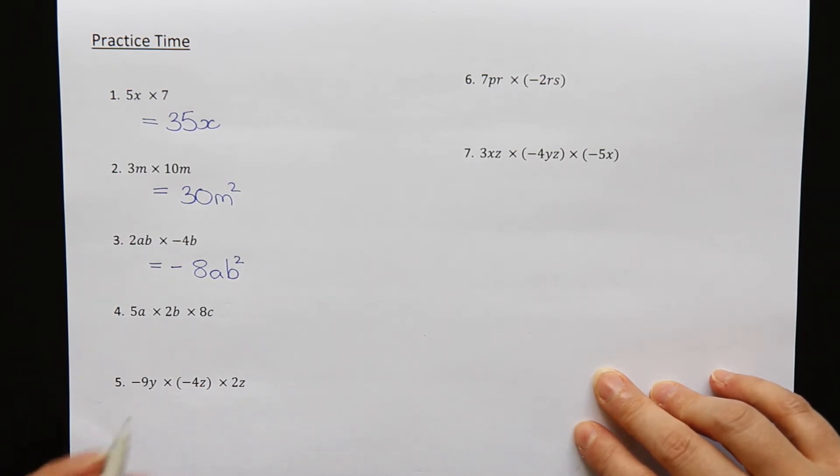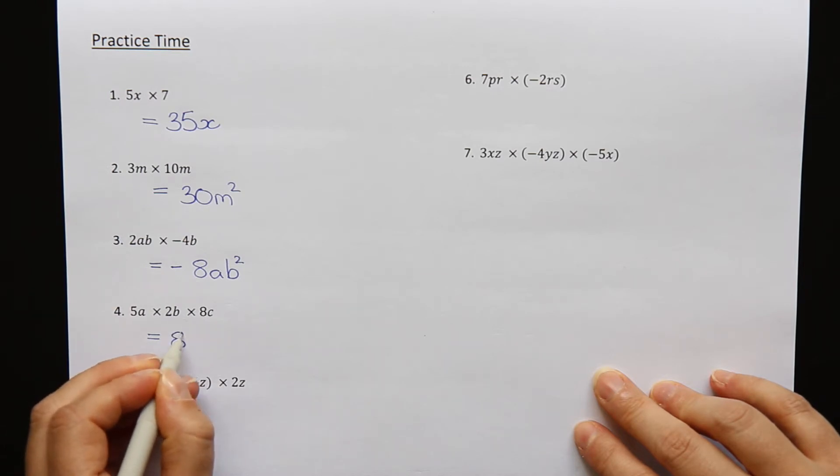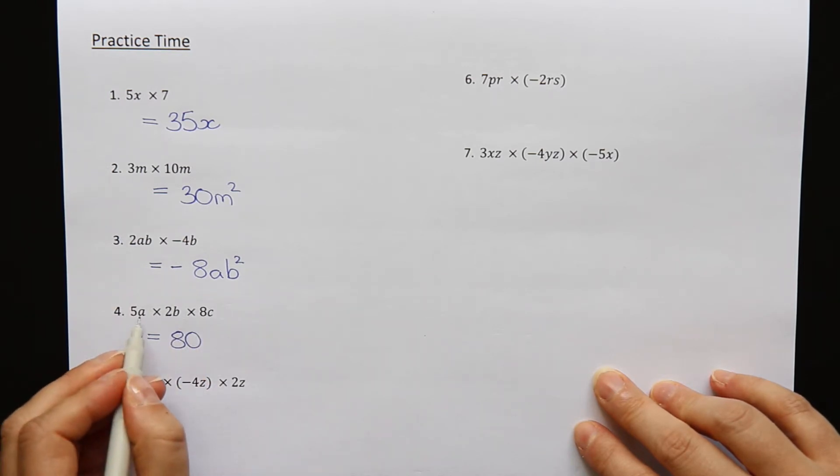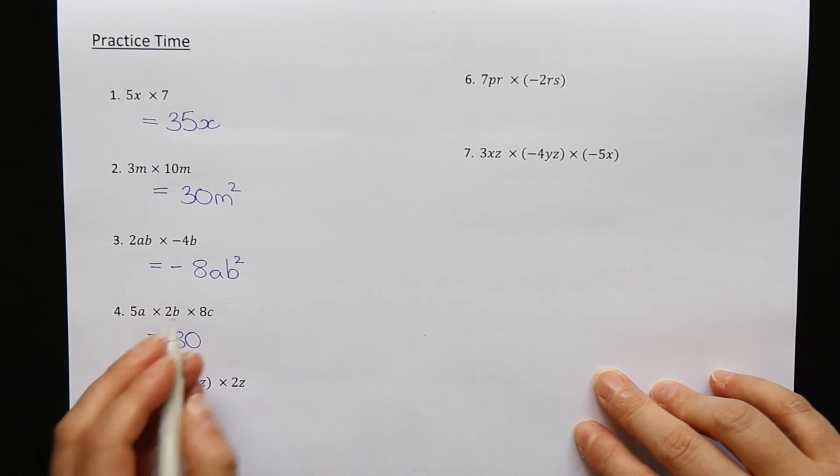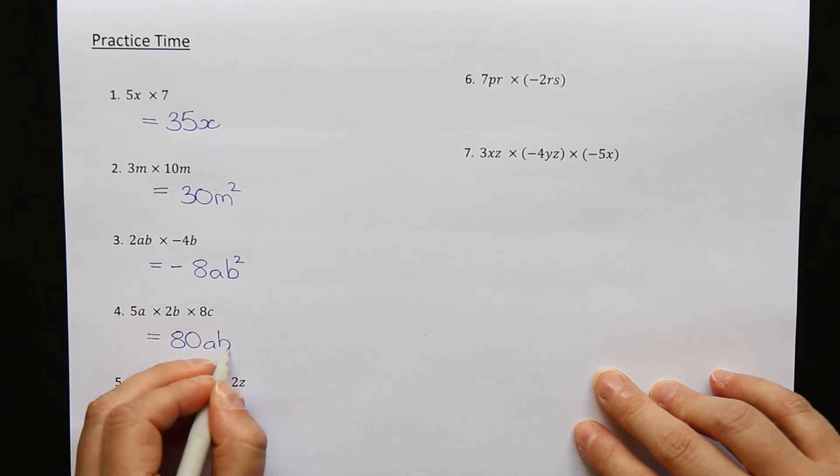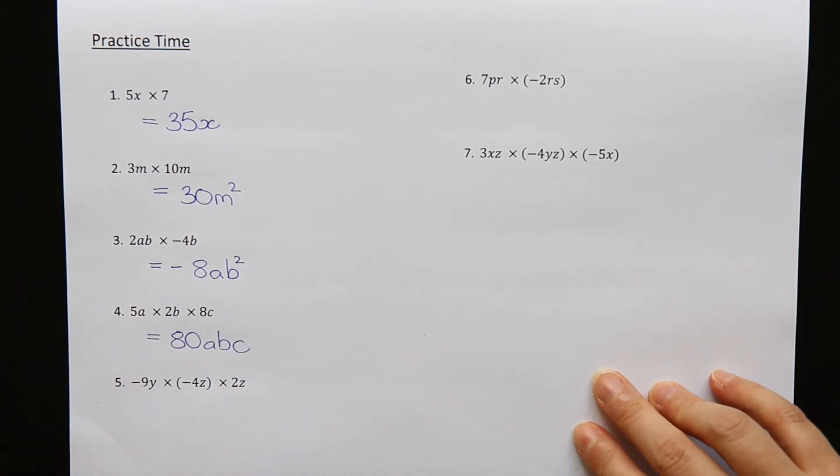Question 4: 5a times 2b times 8c. Multiply all of the numbers: 5 times 2 is 10, times 8 is 80, and the letters abc.